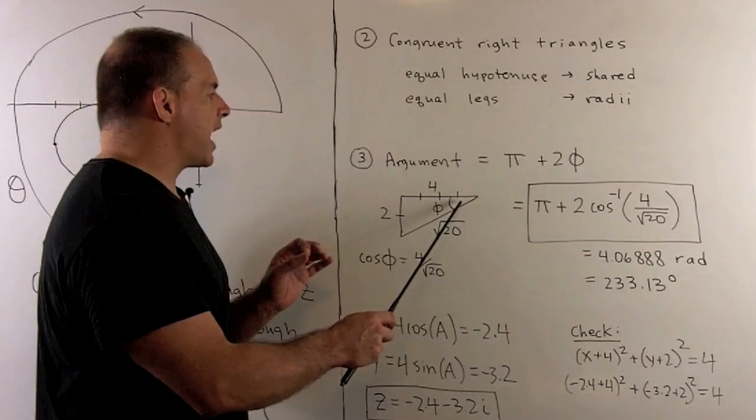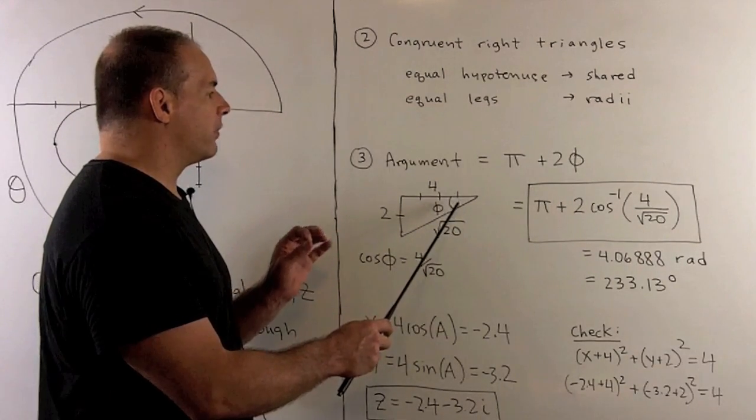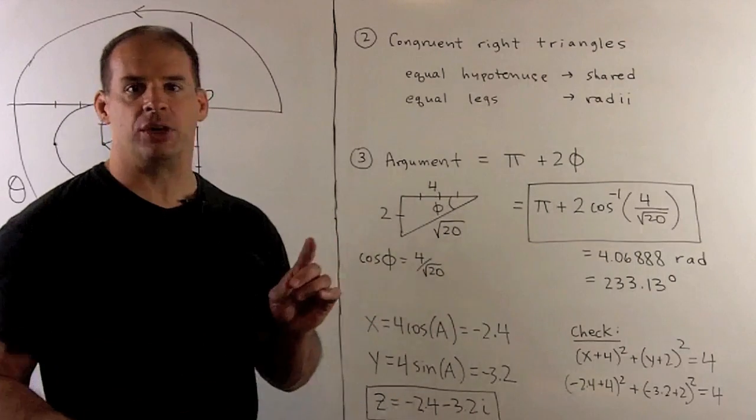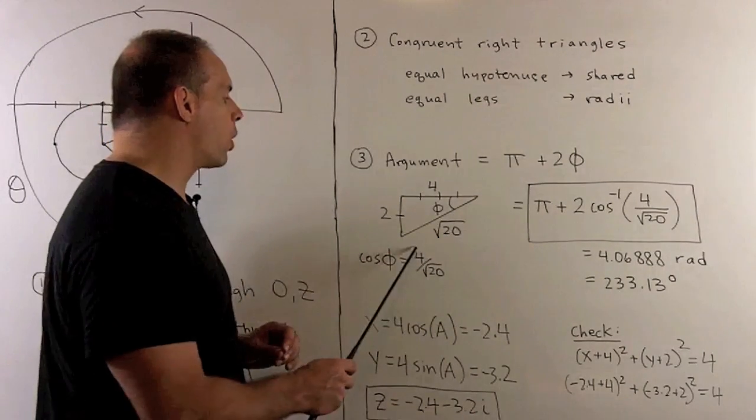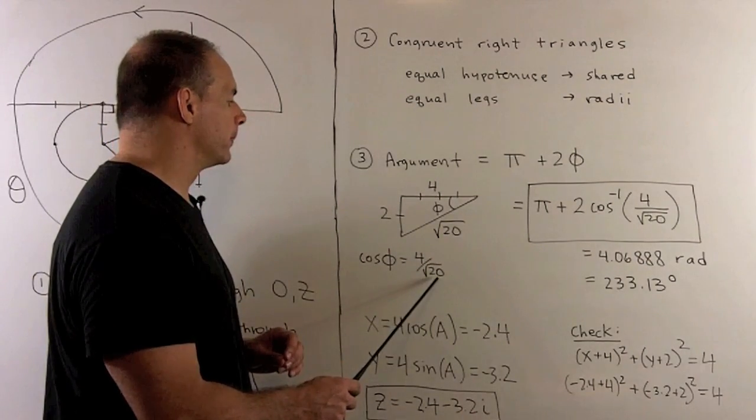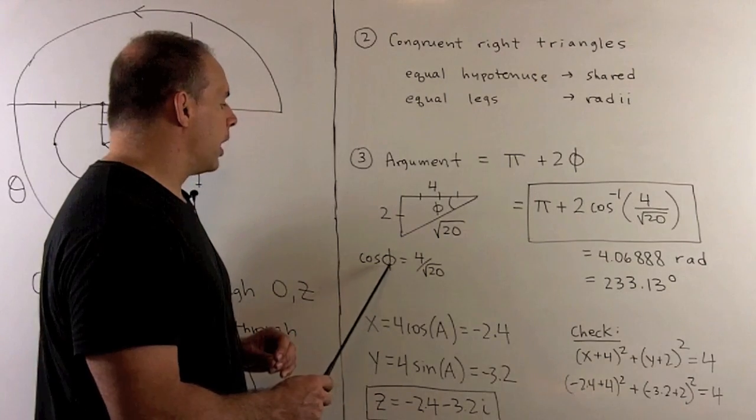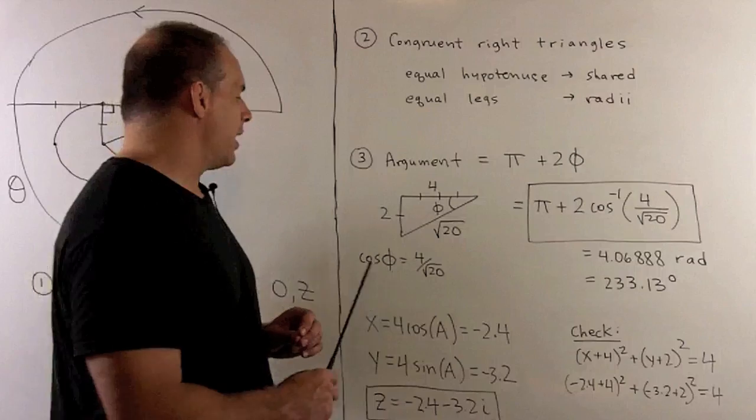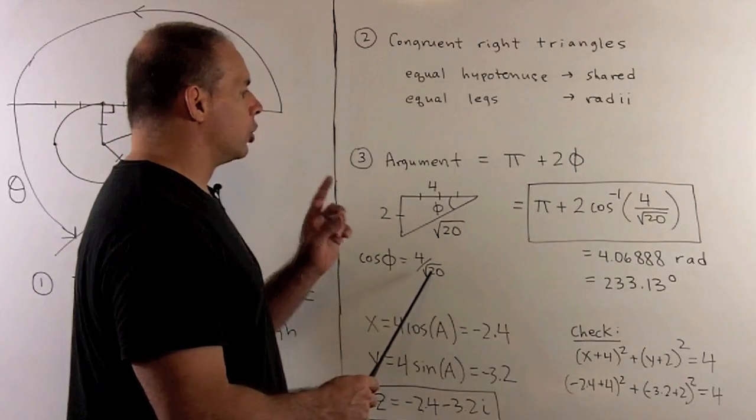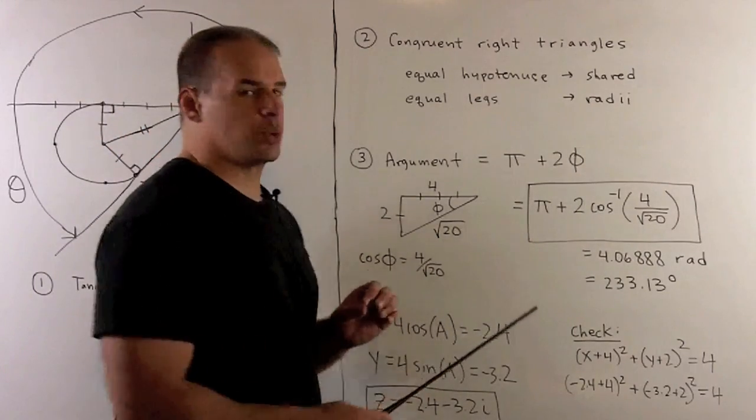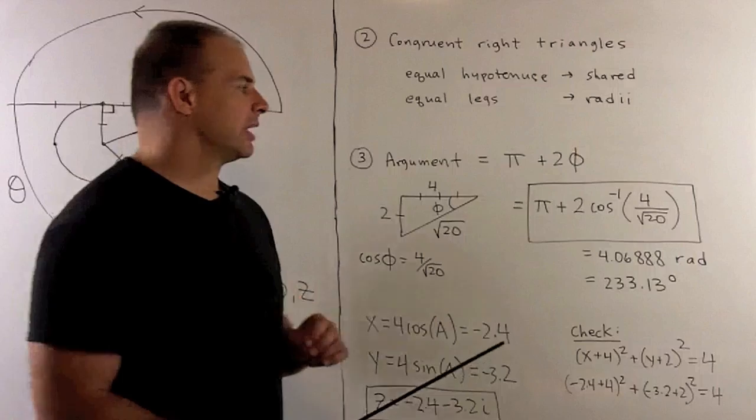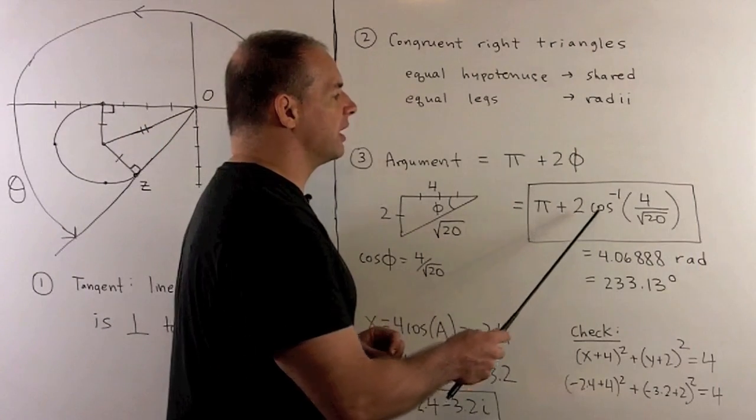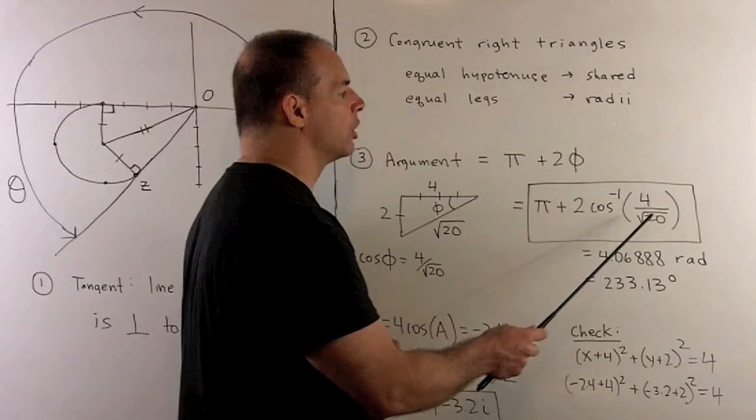Now, if I want to find this angle, we'll have the cosine of this angle as the adjacent over the hypotenuse, or four over square root of 20. But, with the angle, I want to push the cosine to the other side, as inverse cosine. That means our largest argument, which is between zero and two pi, is equal to pi plus twice the inverse cosine, four over square root of 20.